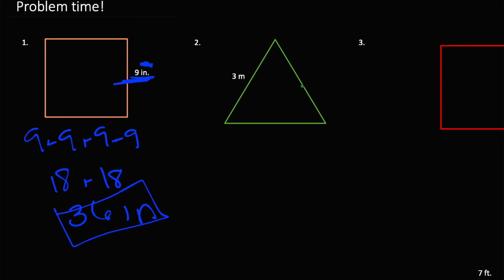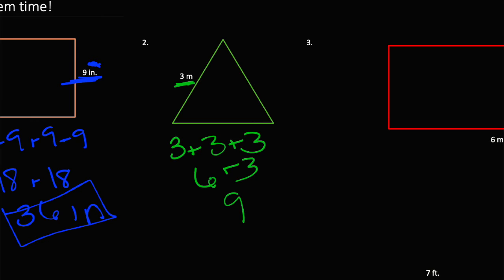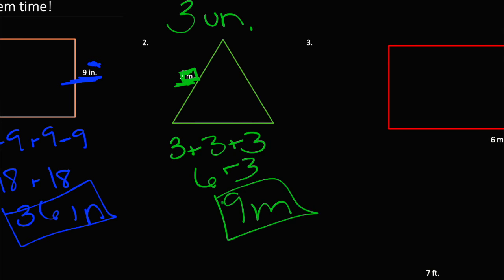Our next one is an equilateral triangle. Remembering that the equilateral triangle is similar to a square — all the side lengths are equal. So since we know they're all equal, we would do 3 plus 3 plus 3. 3 plus 3 is 6, and 6 plus 3 is 9. So we know that our perimeter is 9. We always have to check the units right next to the number — since it gives us meters here, we can write 9m, which is 9 meters.